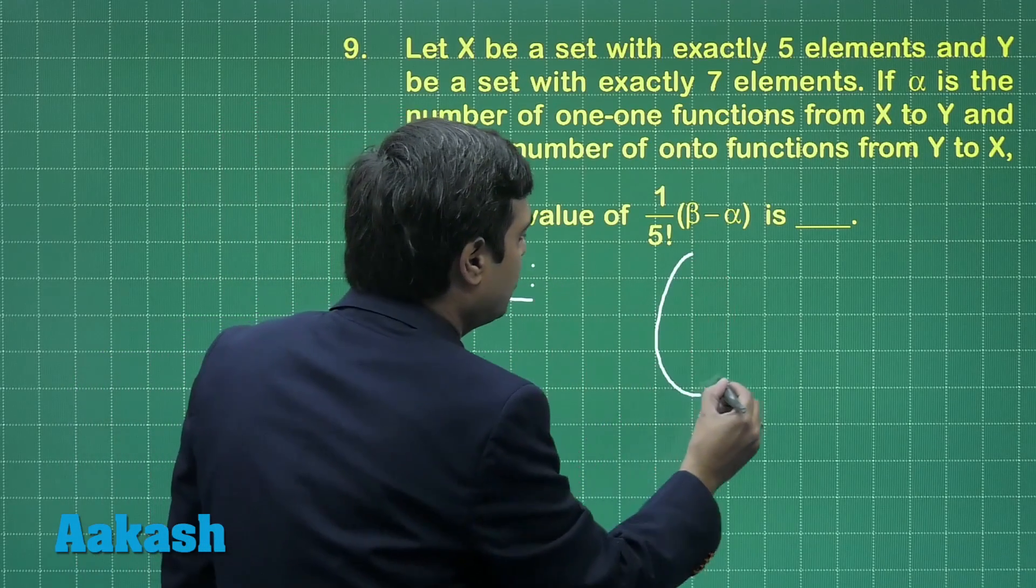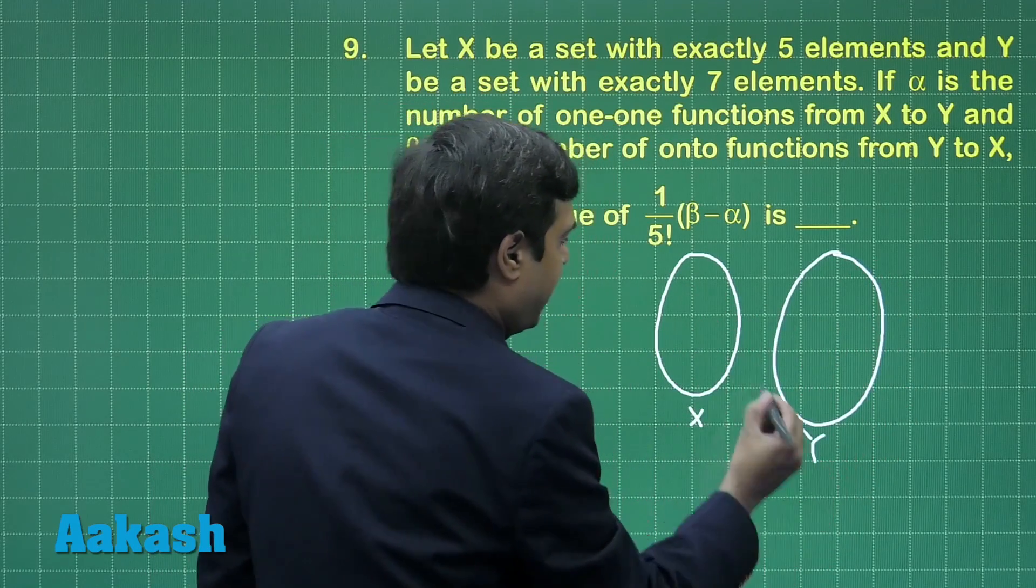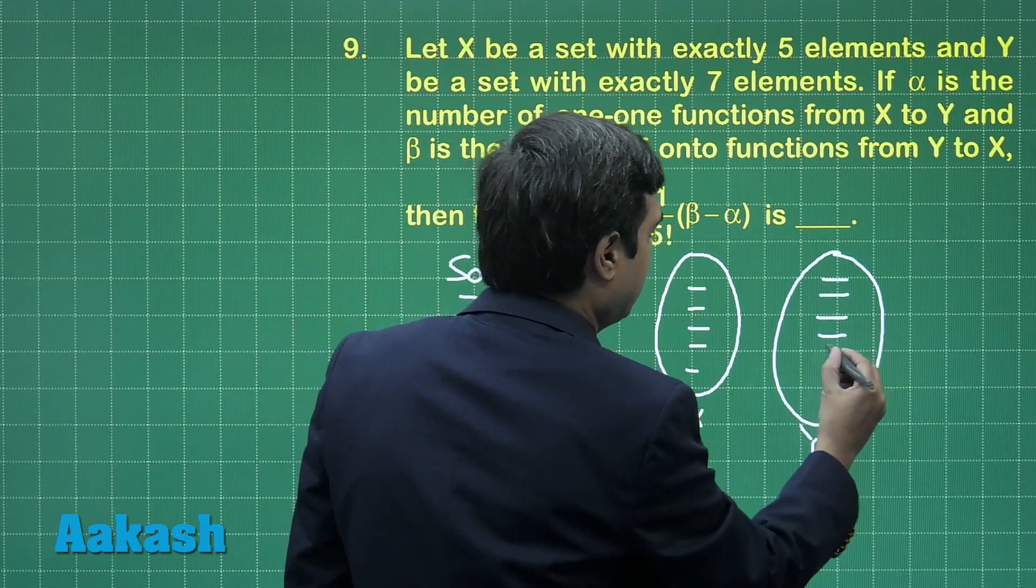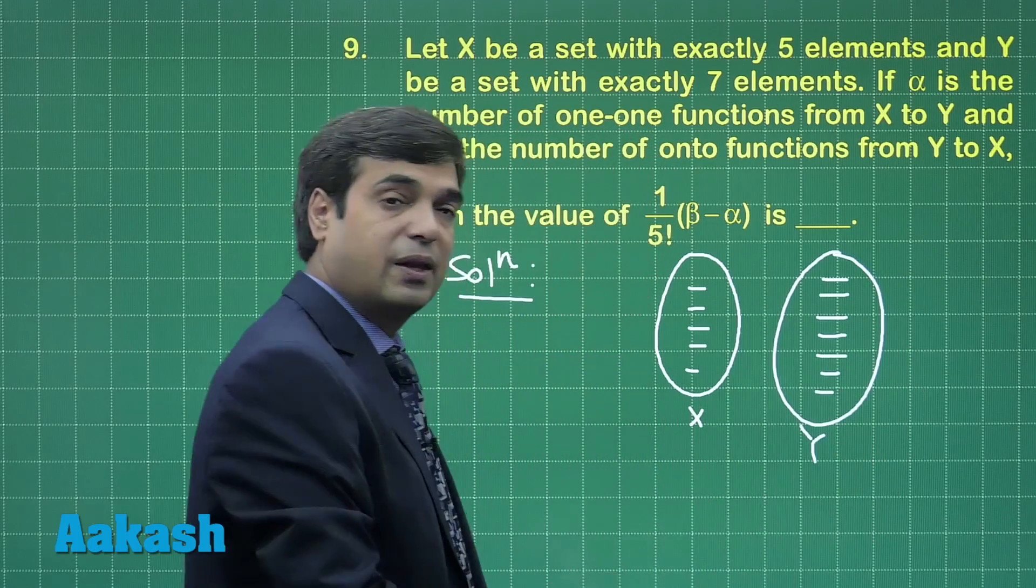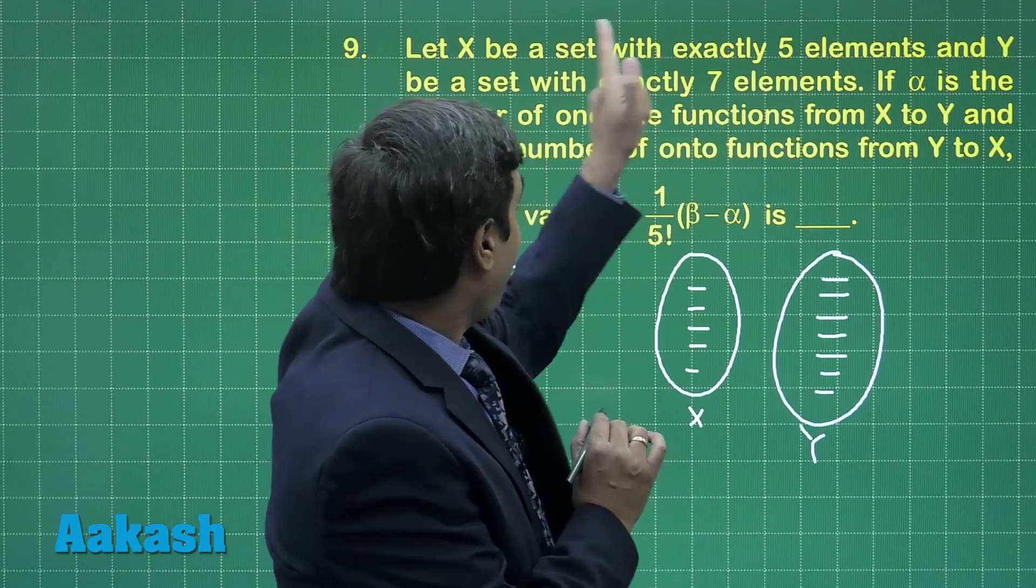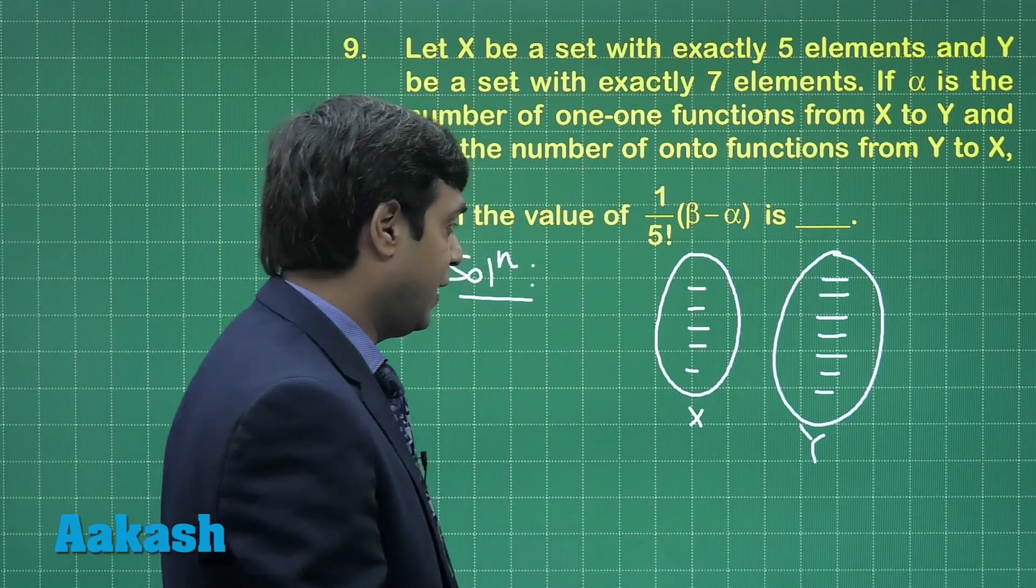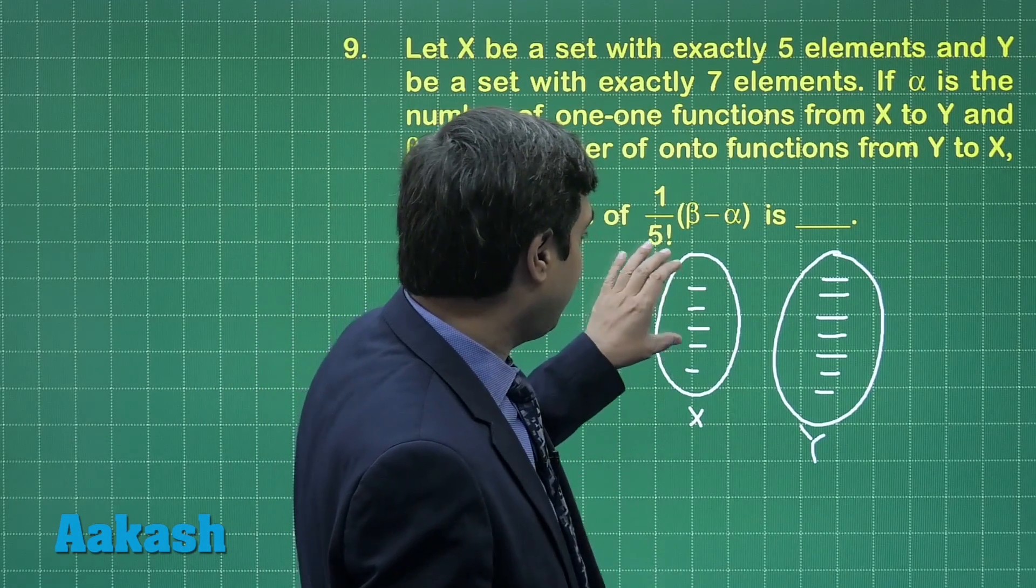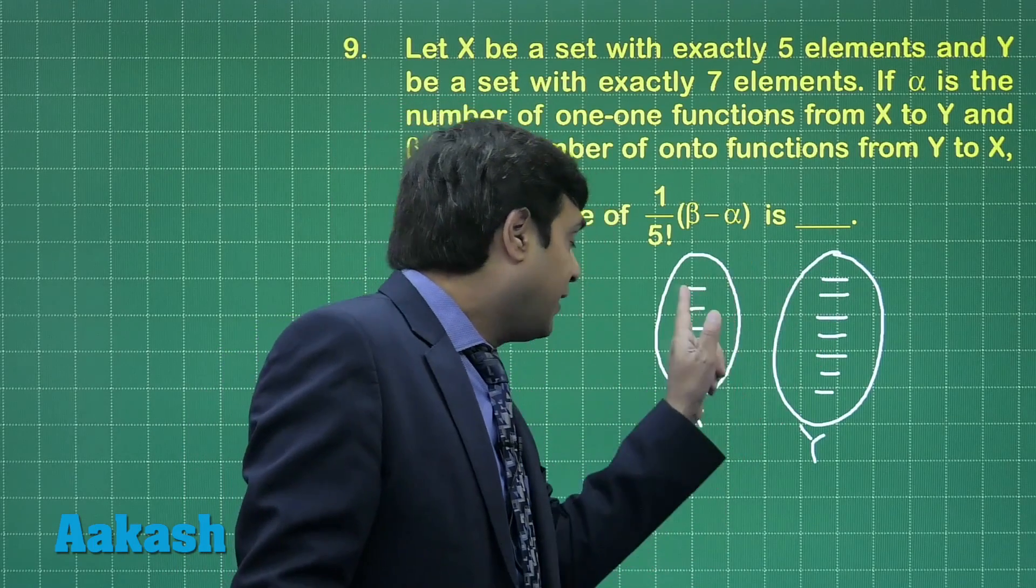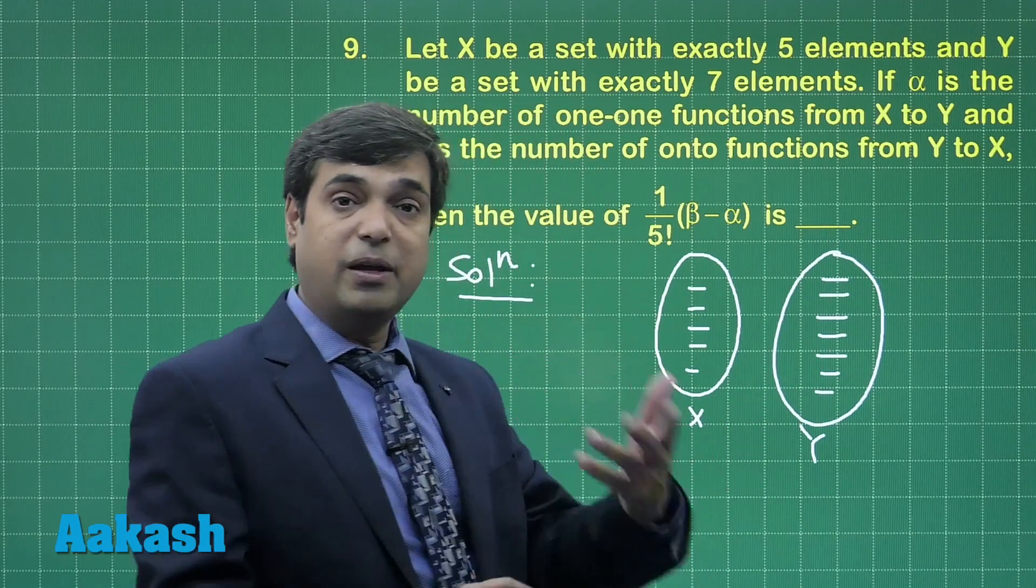Let us consider 2 sets, X with 5 elements and Y with 7 elements. Alpha is the number of one-one functions from X to Y. One-one function meaning these 5 elements, each is associated with exactly one element of Y and there is no such element in Y which is having 2 pre-images.